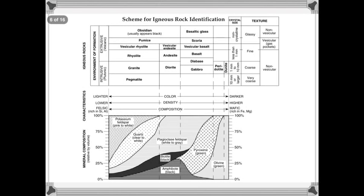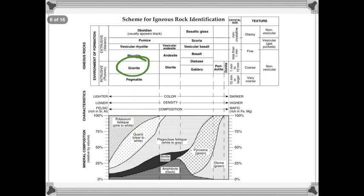Same thing with granite — we look down, just draw your finger down, and we see that granite has quartz, potassium feldspar. It also has some plagioclase feldspar, biotite, and amphibole. When we look at granite, it has these minerals, but it does not have any of the others, because those minerals aren't directly below it.